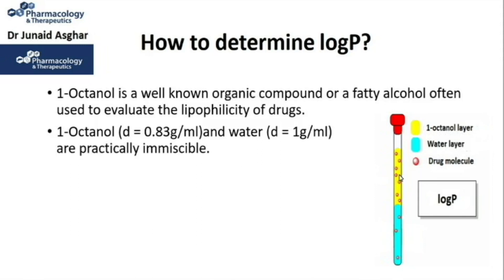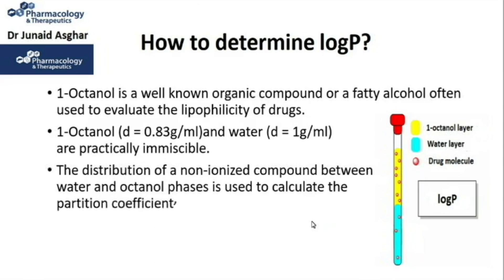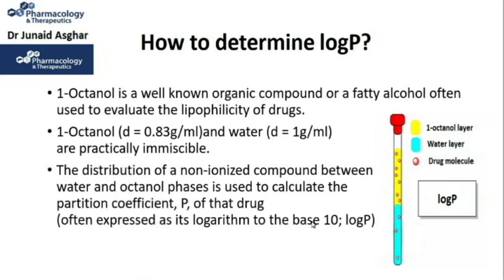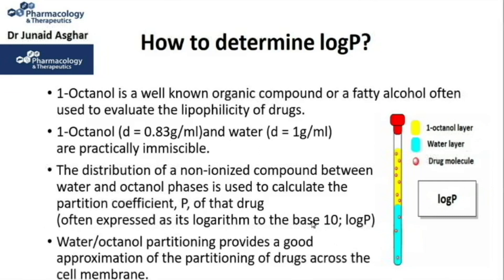In this figure, the unionized drug has distributed itself more in the octanol phase, or the lipid phase, compared to the water phase. The distribution of a non-ionized compound between water and octanol phases is used to calculate the partition coefficient P, often expressed as its logarithm to base 10, or log P. Water-octanol partitioning provides a good approximation of drug partitioning across the cell membrane, and is an index used in drug discovery to estimate solubility, membrane permeability, and bioavailability.